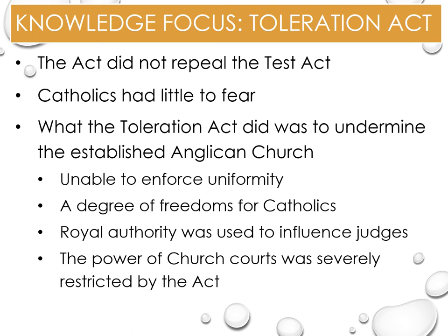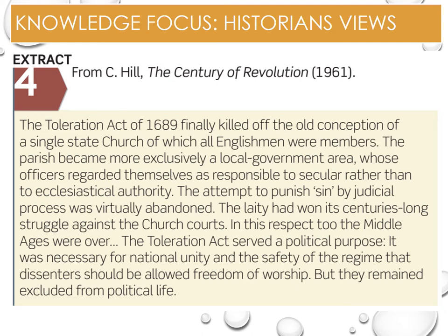William also used his royal authority to influence judges to curb church interference in the lives of Catholics and dissenters not covered by the Act. In previous years, church courts were crucial to upholding the confessional state. However, the Toleration Act greatly restricted their power. Christopher Hill stated in 1961: 'The Toleration Act of 1689 finally killed off the old conception of a single state church of which all Englishmen were members. The parish became more exclusively a local government area whose officers regarded themselves as responsible to secular rather than to ecclesiastical authority.'